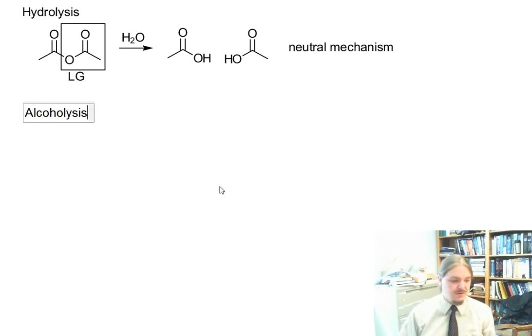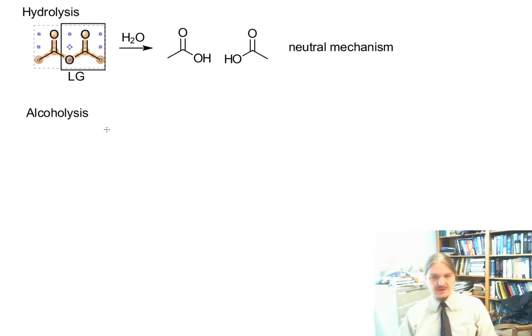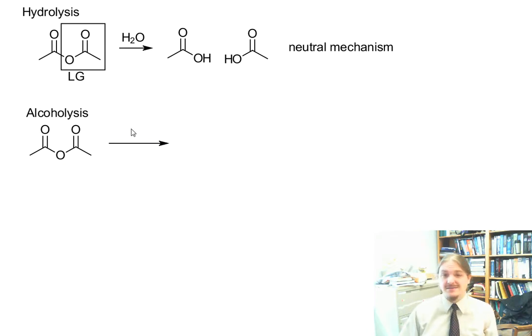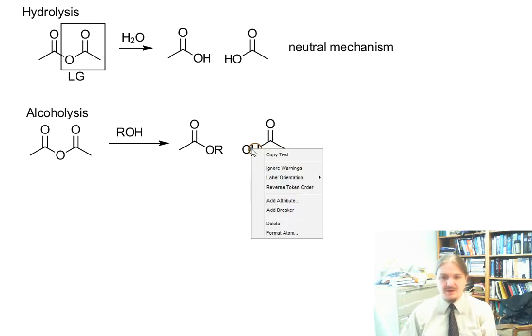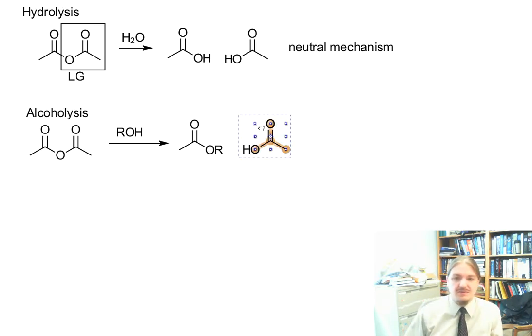It can react with alcohols to form esters. Again, here's a case now where it's not obvious. If we had a non-symmetric or mixed anhydride, which one would be the electrophile, which part would be the leaving group? Because the one that is the leaving group ends up as a carboxylic acid and is not going to form an ester through this mechanism.